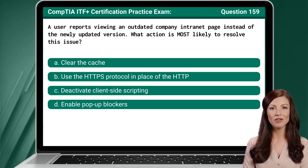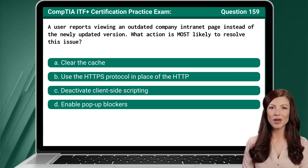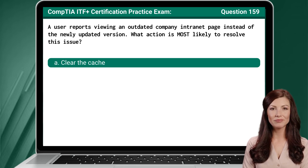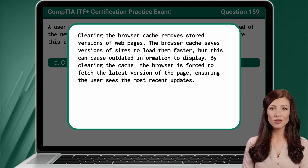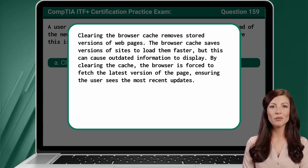Question 159. A user reports viewing an outdated company intranet page instead of the newly updated version. What action is most likely to resolve this issue? The answer is A: clear the cache. Clearing the browser cache removes stored versions of web pages. The browser cache saves versions of sites to load them faster, but this can cause outdated information to display. By clearing the cache, the browser is forced to fetch the latest version of the page, ensuring the user sees the most recent updates.